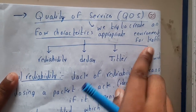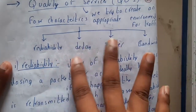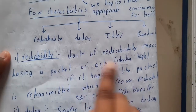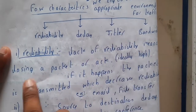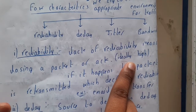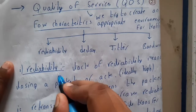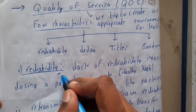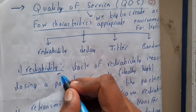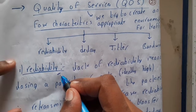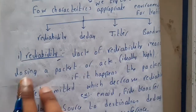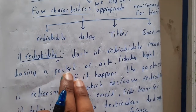We are having four subtopics: reliability, delay, jitter, and bandwidth. Lack of reliability means loss of a packet or acknowledgement. Ideally, reliability should be high. Basically, a system is reliable when even in a bad position its performance is at its best — meaning even in any bad situation it is not going to lose any packets.